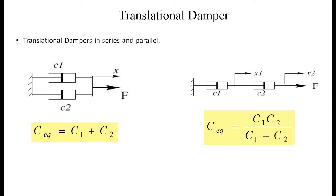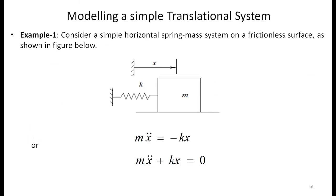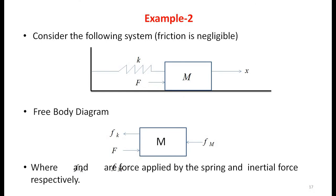Example 1: Consider a simple horizontal spring-mass system on a frictionless surface. A spring connects a fixed wall to a mass, which is displaced x. The equation of motion is m·ẍ = −kx, or equivalently m·ẍ + kx = 0.